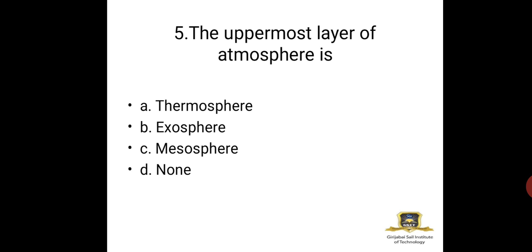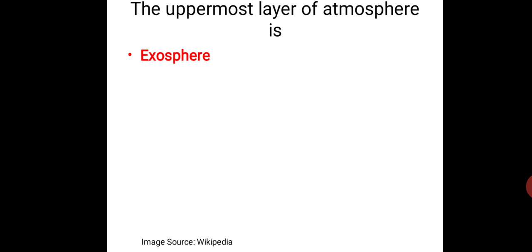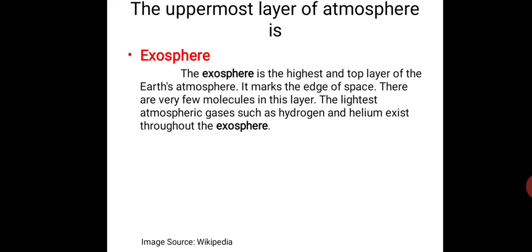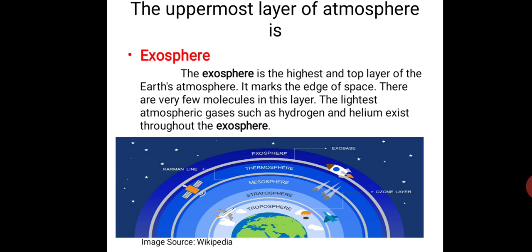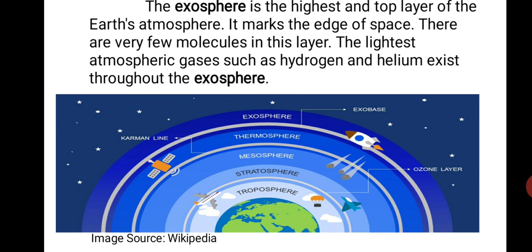Question 5: The uppermost layer of the atmosphere — is it thermosphere, exosphere, mesosphere, or none of these? The answer is exosphere. The exosphere is the highest and top layer of Earth's atmosphere; it marks the edge of space, with very few molecules. The lightest atmospheric gases such as hydrogen and helium exist throughout the exosphere. The layers in order from Earth are: troposphere, stratosphere (with the ozone layer), mesosphere, thermosphere, and finally exosphere.